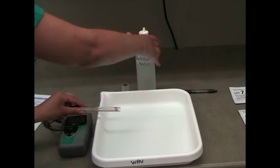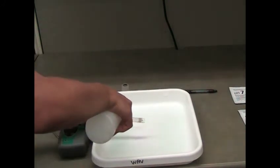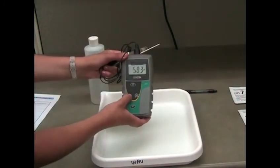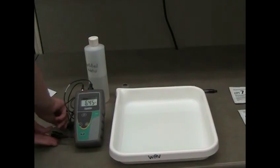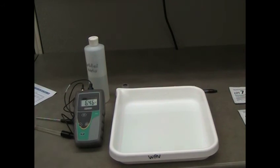Rinse the electrode with distilled water and shake off the excess. Press CAL on the pH meter to begin the calibration process. The letter CA will appear on the screen. Once you enter the calibration mode, the pH symbol and reading will flash on the screen.